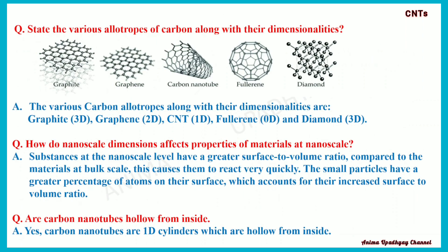State the various allotropes of carbon along with their dimensionalities. With the help of images, I have tried to show you the various allotropes of carbon and their dimensionality. Graphite is 3-dimensional, graphene 2-dimensional, carbon nanotube 1-dimensional, fullerene 0-dimensional, and diamond 3-dimensional. It is graphene which is folded to form a carbon nanotube.